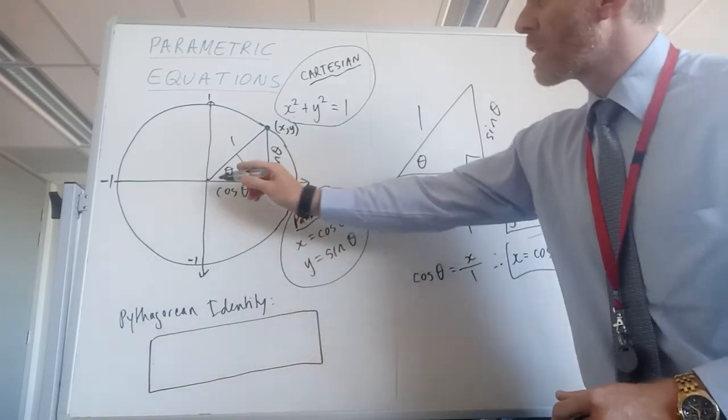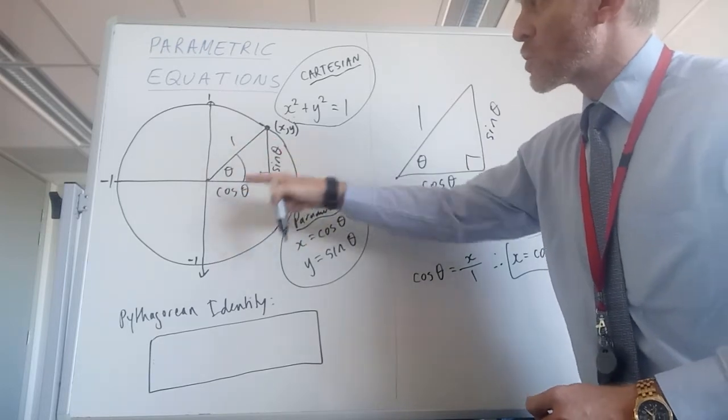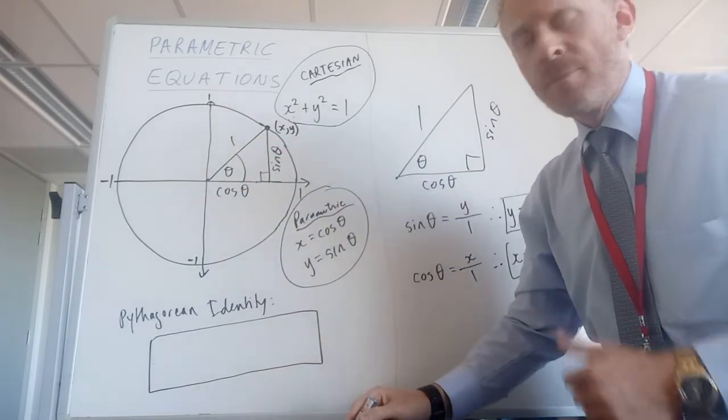Before I do that, focus back on this triangle. Now, it's got a hypotenuse of 1, and it's got shorter sides, cos and sine.